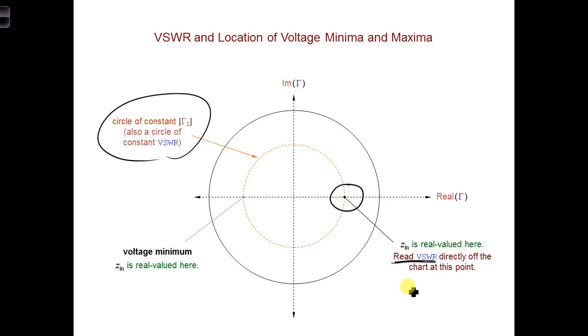This location also corresponds to where all the voltage maxima occur. So remember, as you spin around further and further away from the load, for example, you're going to cross this multiple times. Each time you cross this axis, you're crossing a point where there's a voltage maximum.